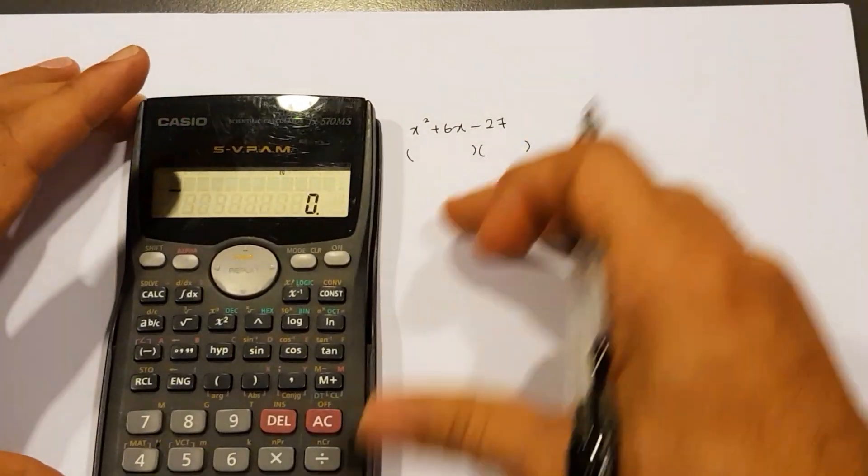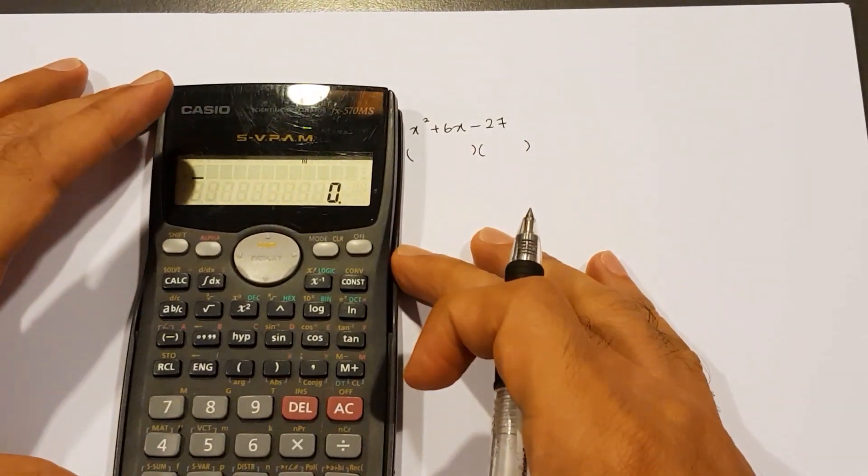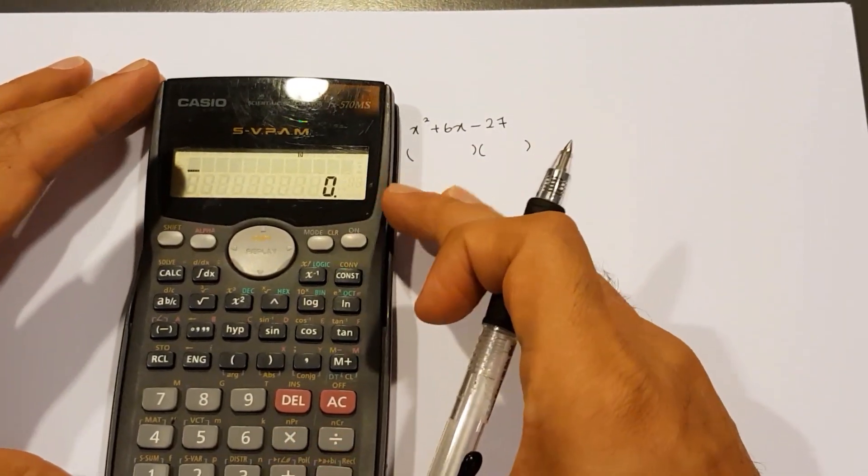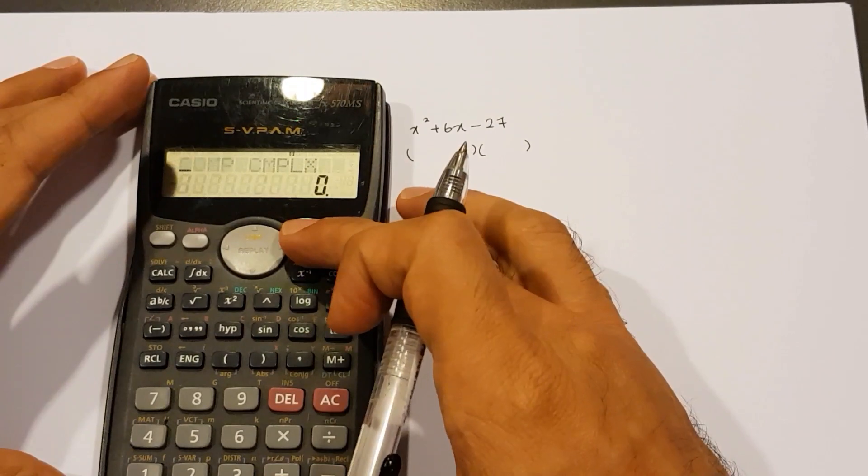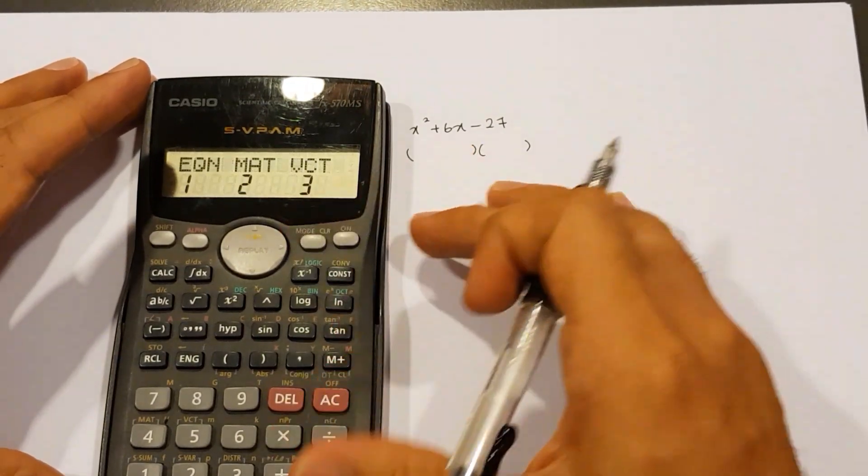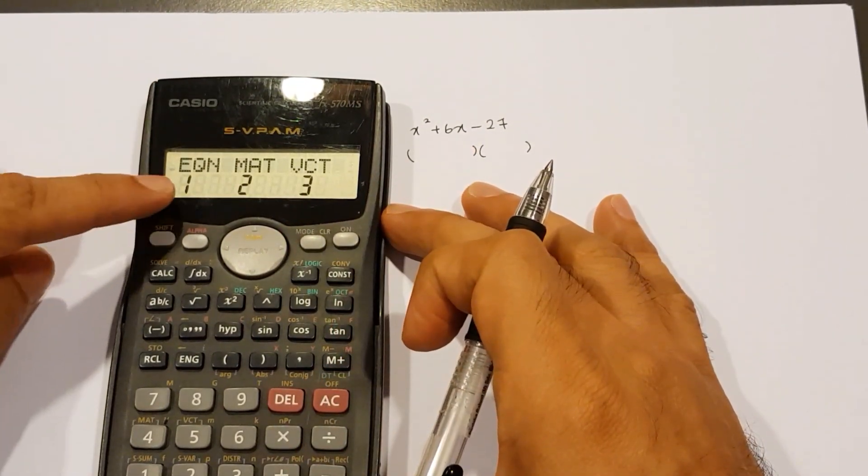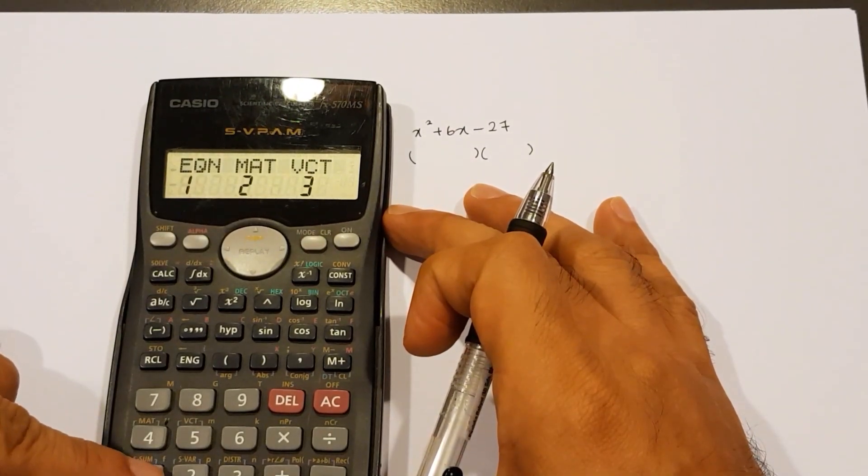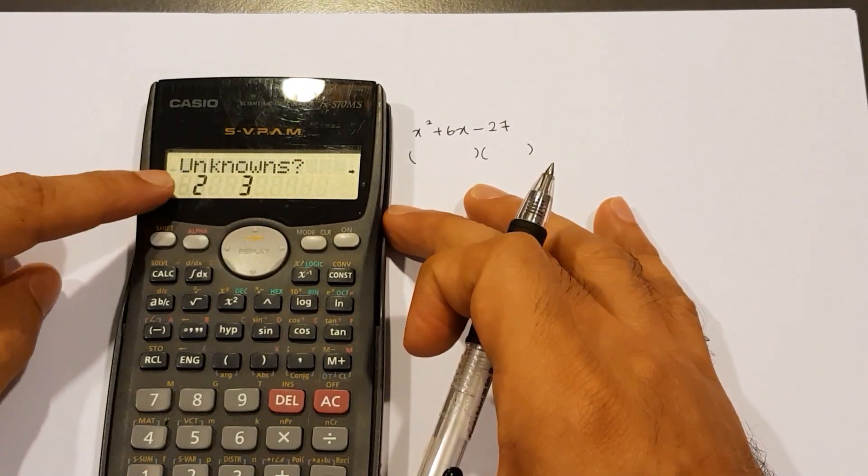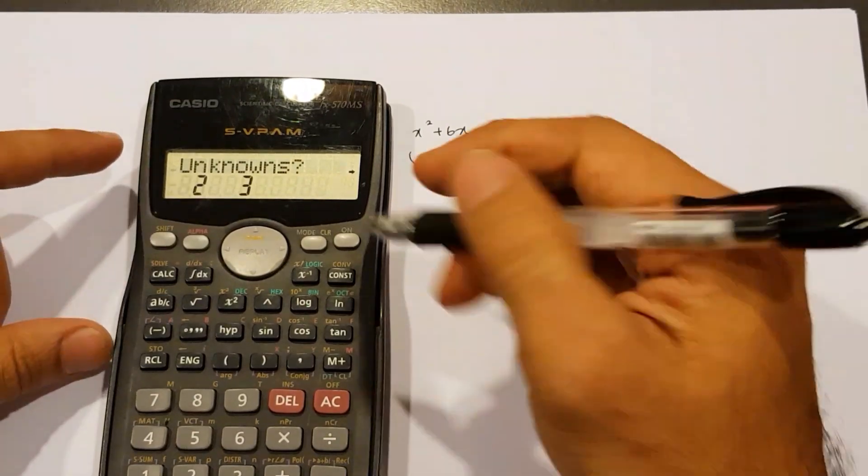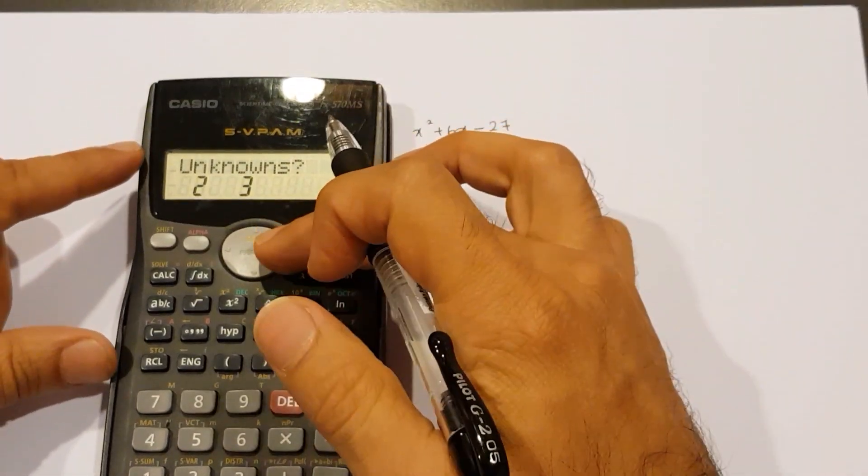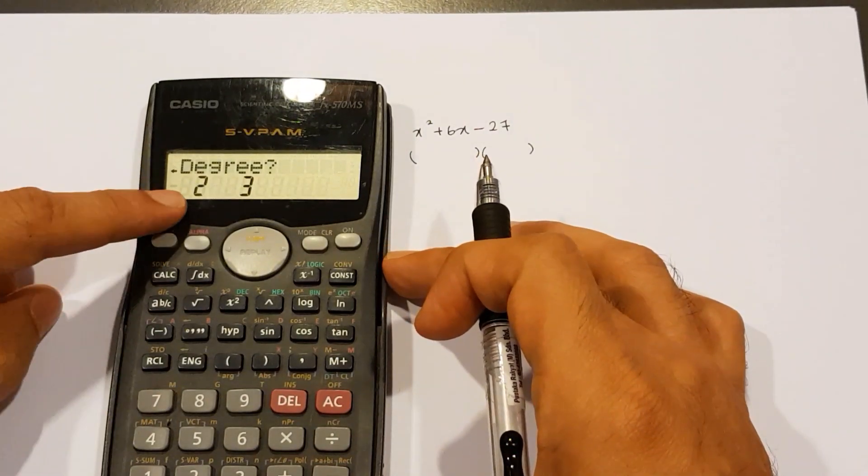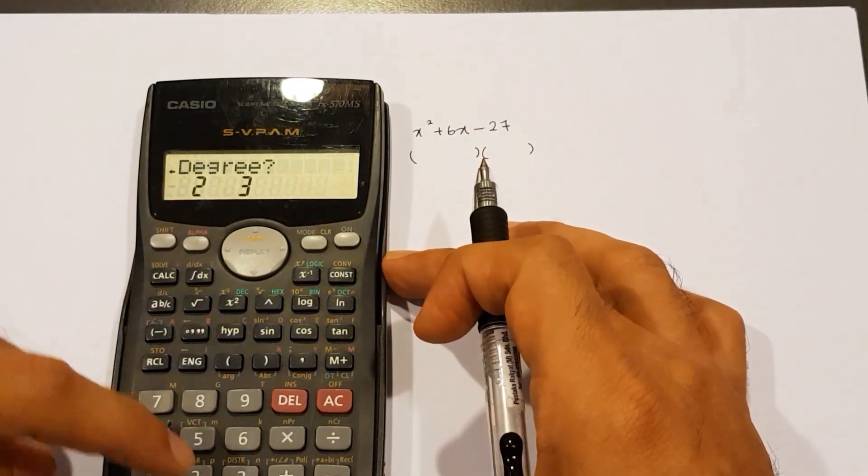First, we'll need to press the mode button three times. So I press 1, 2, 3, and then you'll get EQN where there's the number 1 below that. So I press 1, and we're going to ignore the unknowns here. Press the right arrow right here, and that will show degree. The degree will be 2 because the power number is 2. So go ahead and tap 2.